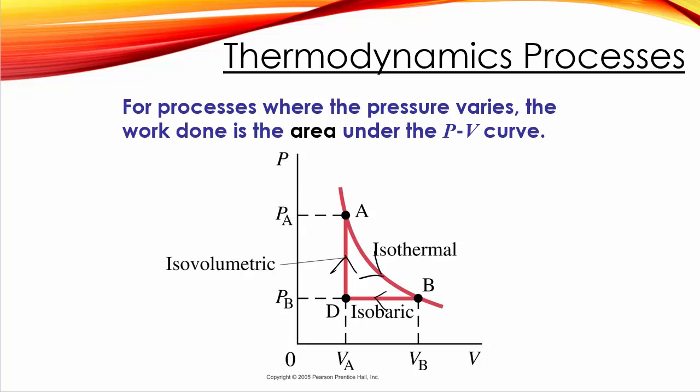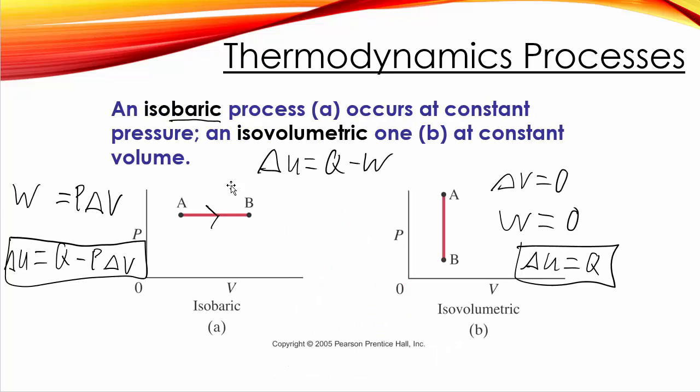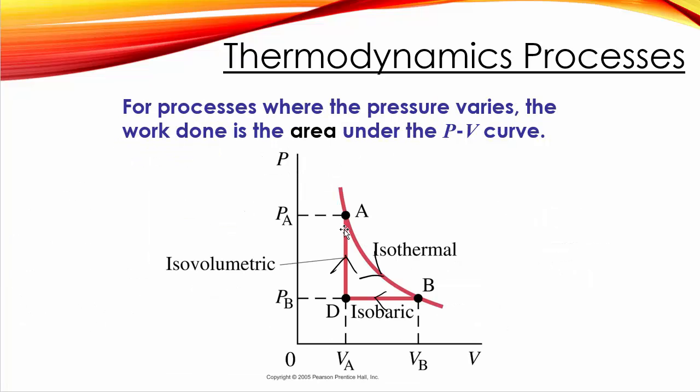In our equations, we're pretty much only going to calculate the work done when we've got an isobaric process, P delta V. Otherwise, we would need an integral, and this class is in calculus space. Basically, you've got work is the integral of P dV. But we're not going to be dealing with that. But it is still true that the area under the curve on a PV graph is the work done.